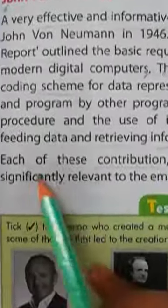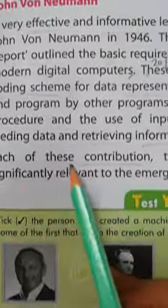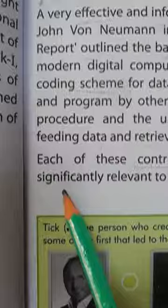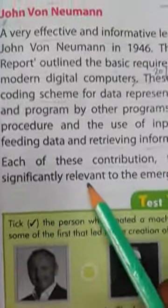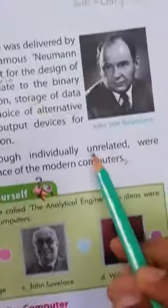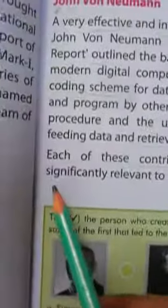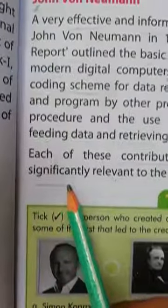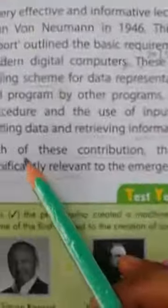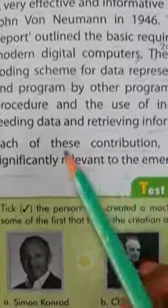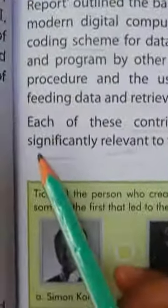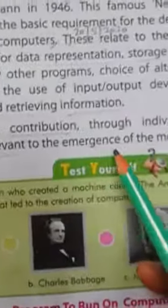Each of these contributions — contribution means Yogdana — इन में से प्रत्येक का Yogdana — throughout visually unrelated work, are significantly relevant to the emergence of the modern computers. Unrelated means Asambandhi, significantly means Kafi, relevant means Parsangik. वैयक्तिक रूप से असंबंधित कार्य के माध्यम से आधुनिक computer के उद्भव के लिए महत्वपूर्ण रूप से प्रासंगिक था.